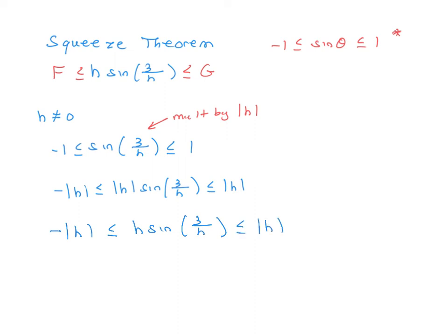And essentially, we are there. On the left, the limit as h goes to 0 of negative the absolute value of h is 0. And the limit as h goes to 0 of just the absolute value of h is 0, too. Because this function, for all values of h not equal to 0, is trapped between these two limits, it must have the same limit. So from all of this, we can conclude the limit as h goes to 0 of h times sine of 3 over h is equal to 0.